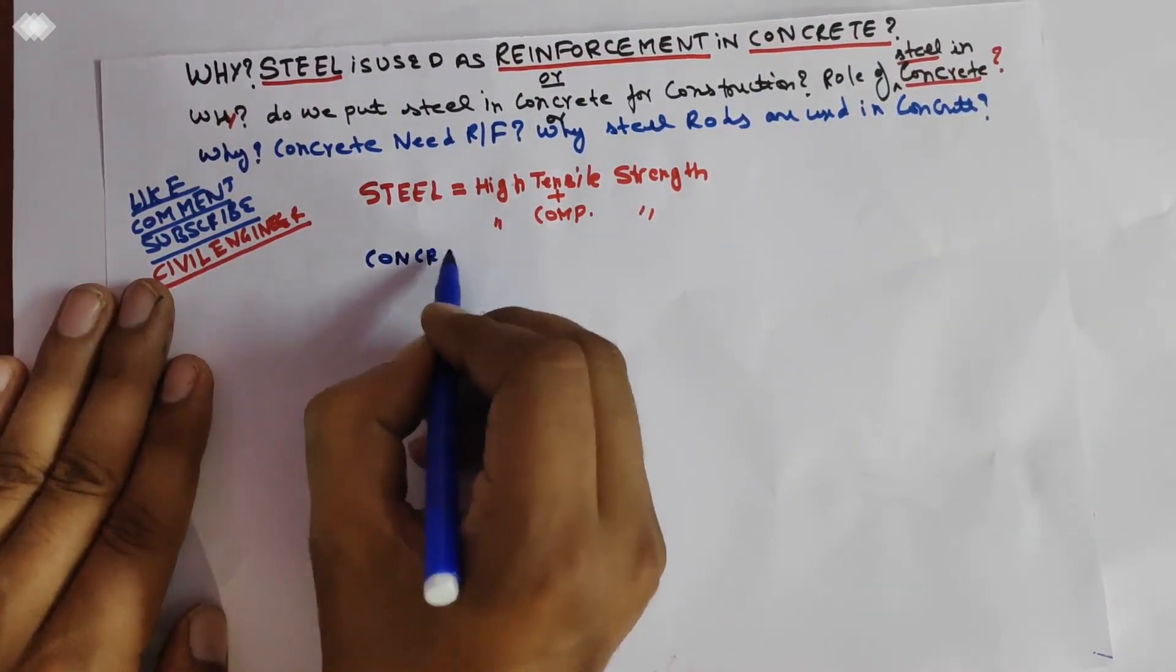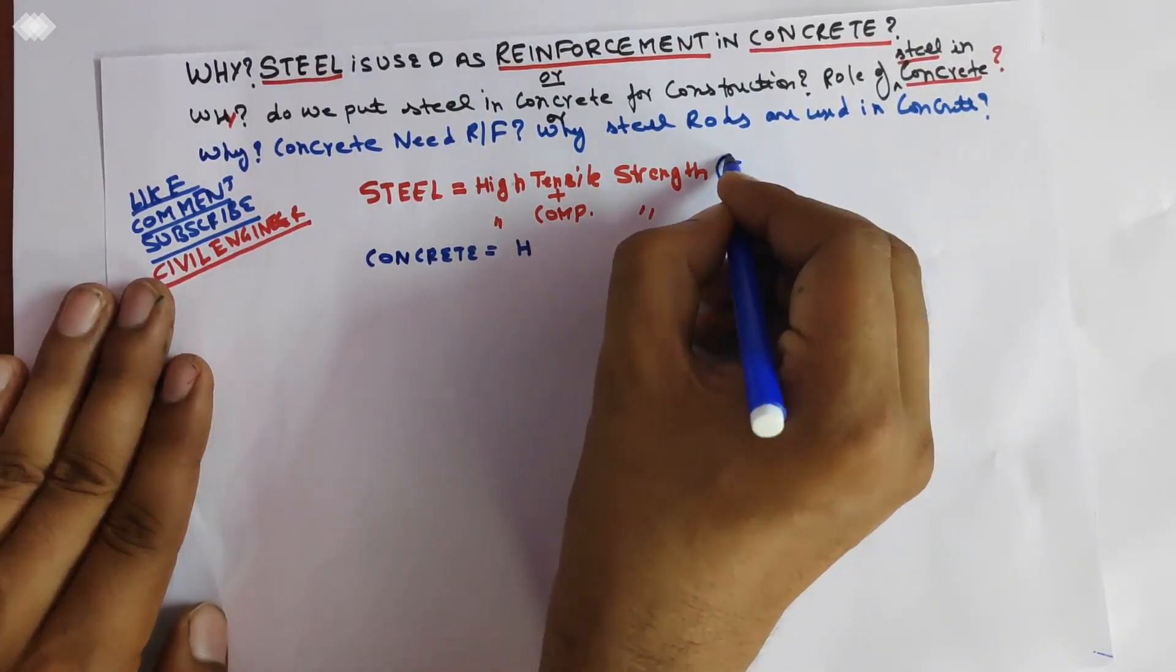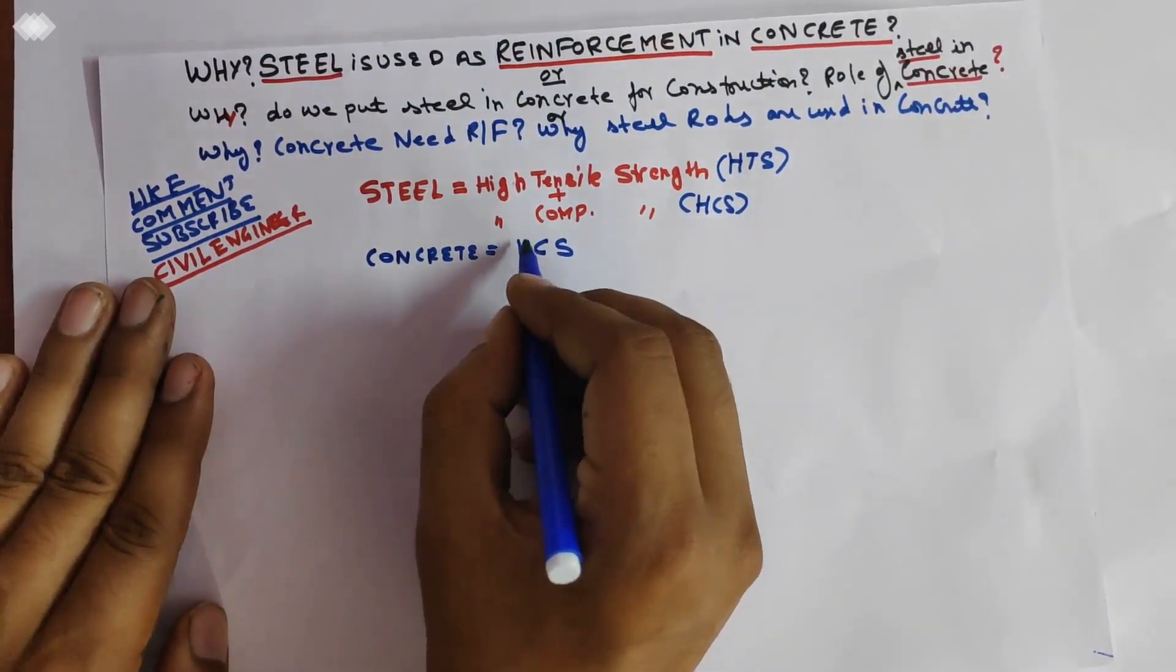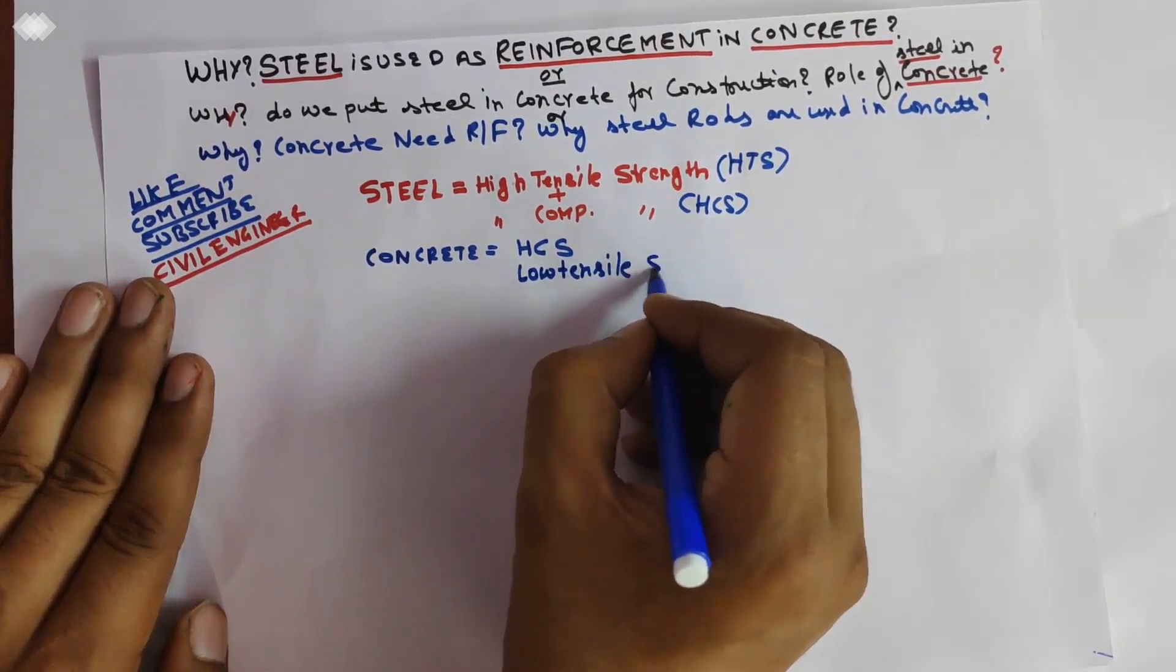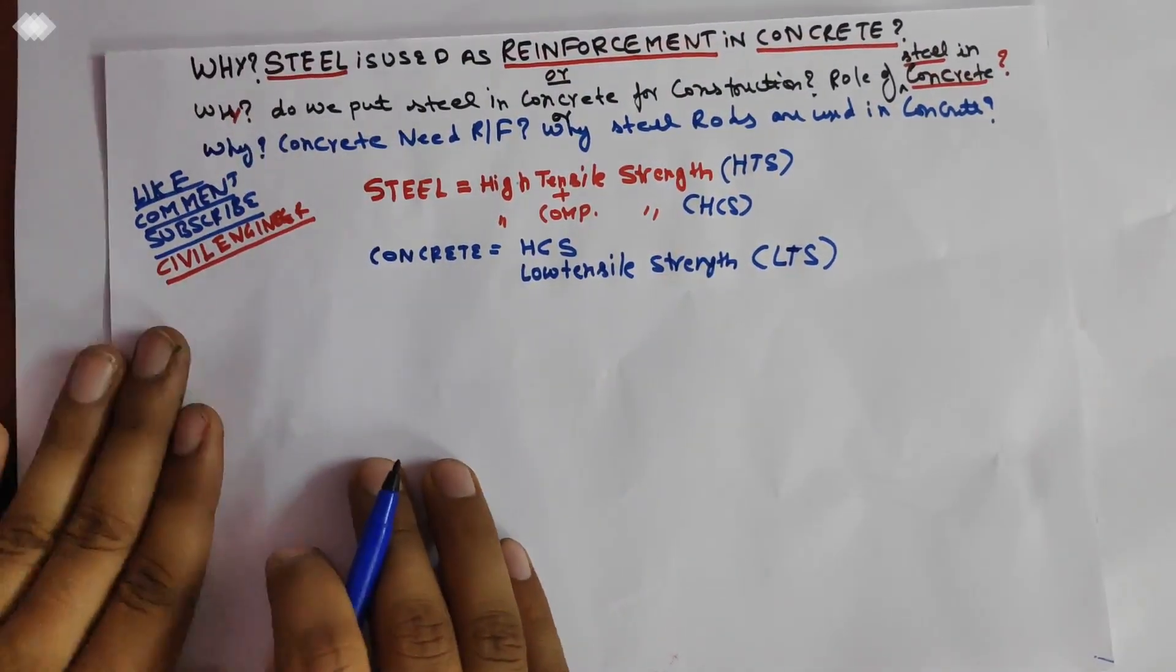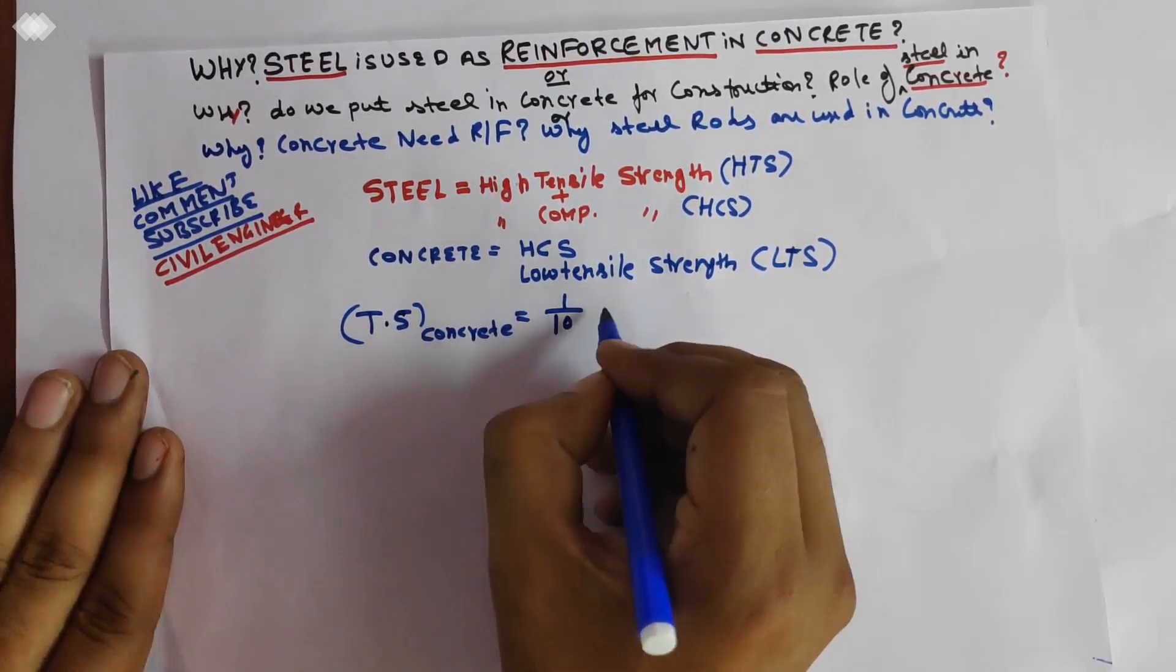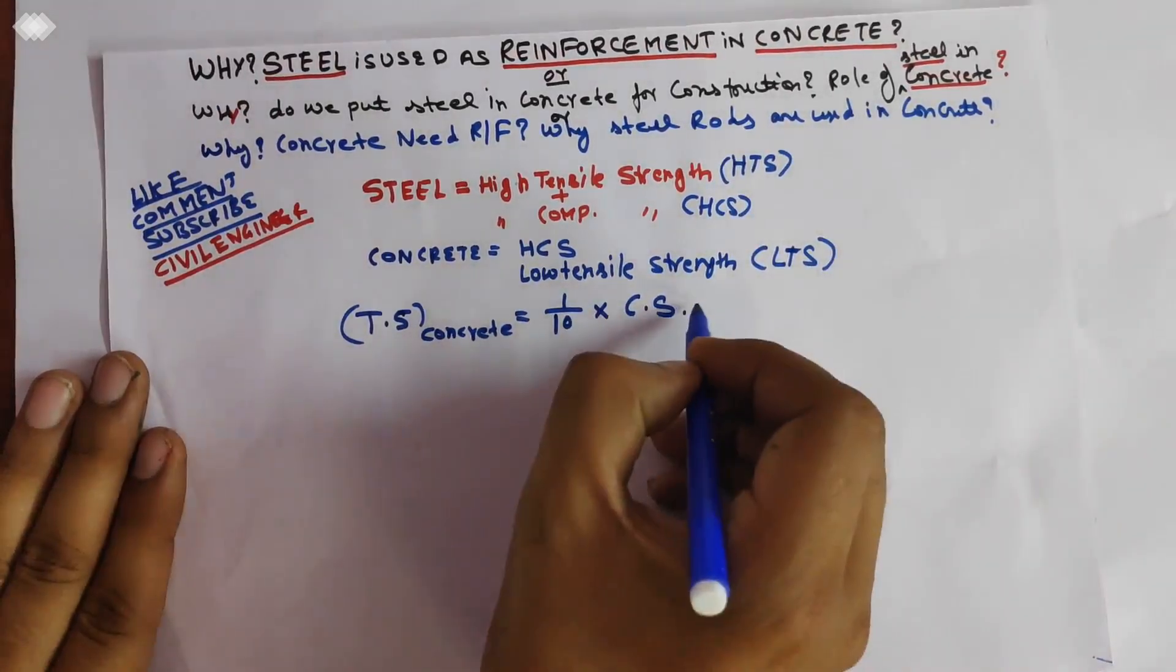Whereas concrete has high compressive strength, this is a mixture of high compressive strength and low tensile strength. You can say tensile strength of concrete is one-tenth of its compressive strength.